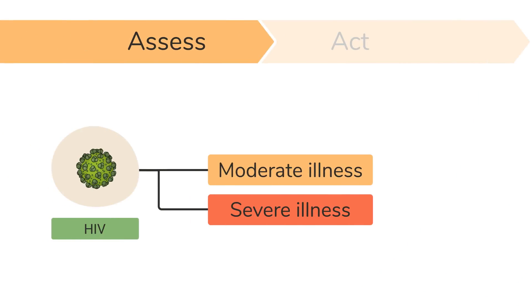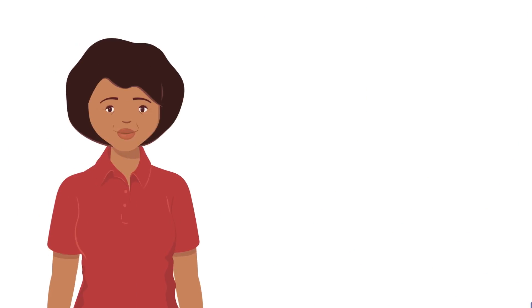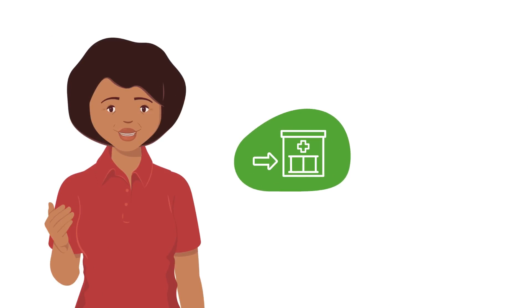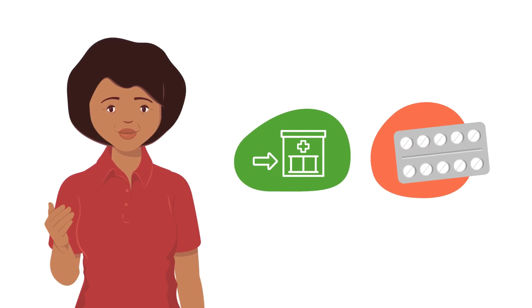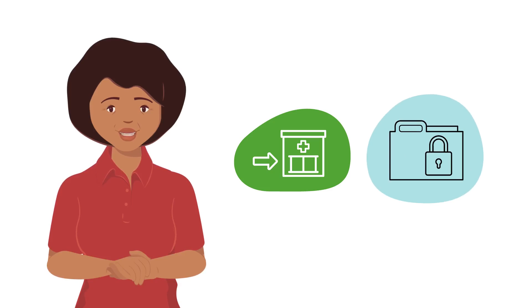Once you have completed your assessment, you can decide if the child has signs and symptoms of a moderate or severe illness. For both illnesses, you will need to refer the child to a health facility. This process will be explained in more detail in another video. Remember that early testing and treatment are key to managing HIV. Encourage all those who do not know their status to be tested for HIV, and always protect the HIV status of your patients.